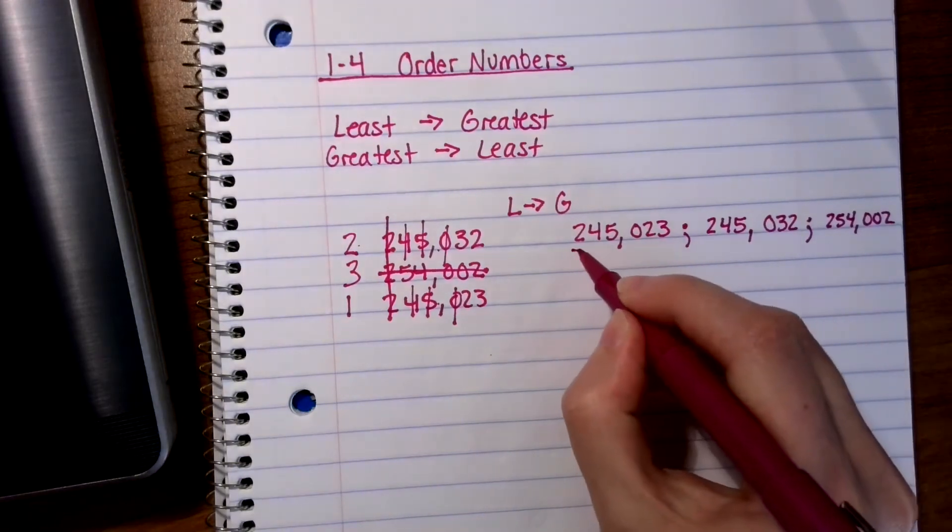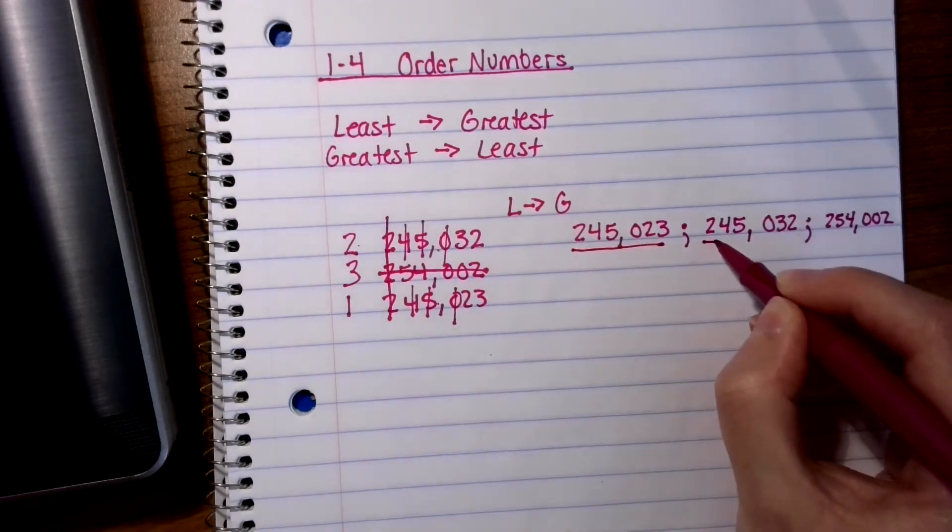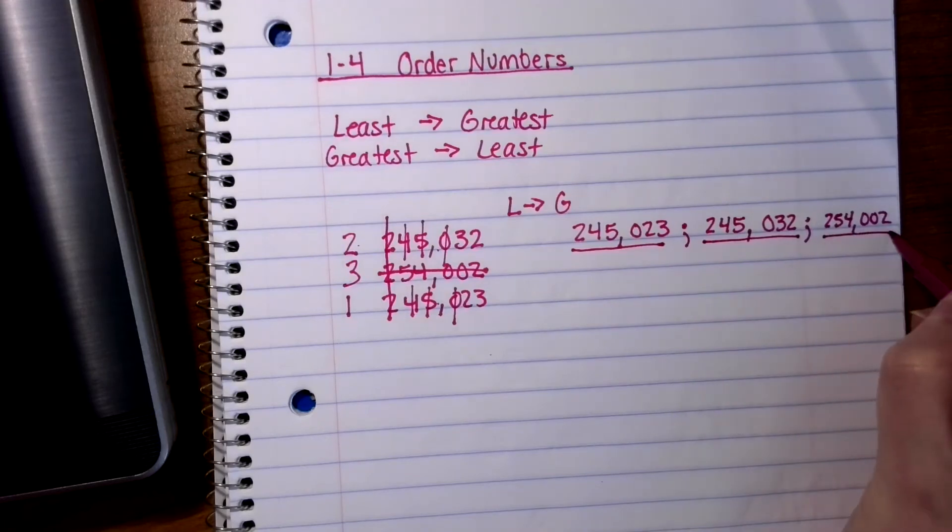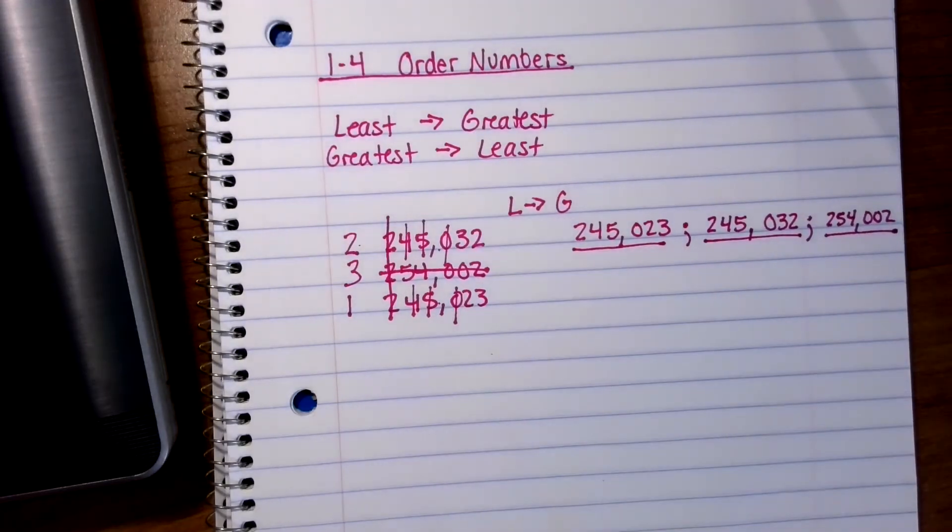254,002. Okay, so here is my smallest, the middle number, and the largest number. So I put them in order from least to greatest.